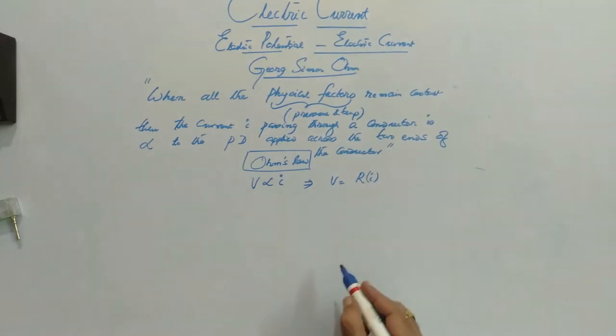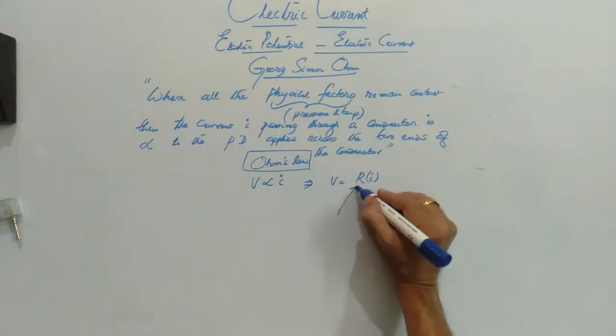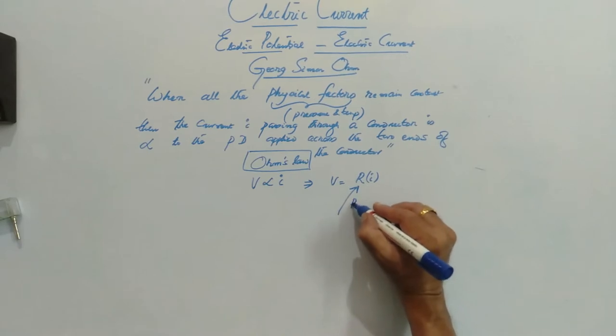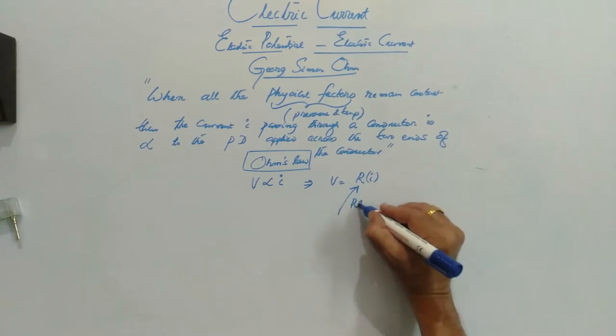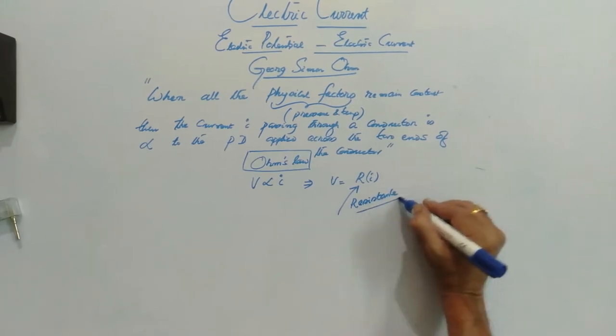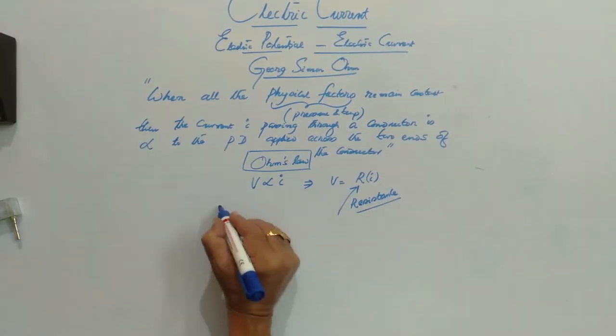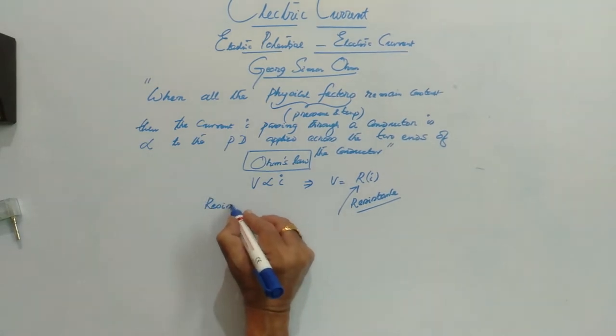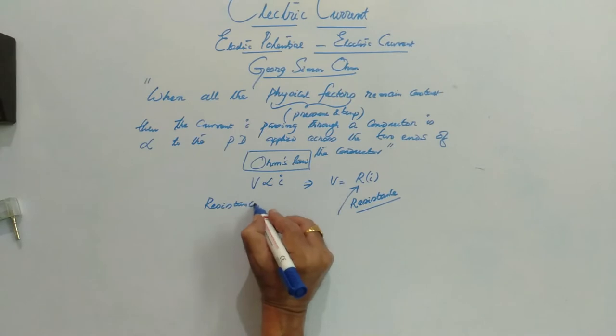times current. This constant of proportionality is known as resistance. Resistance is represented by a symbol